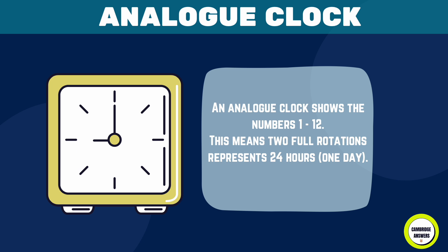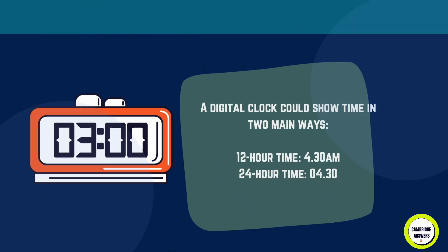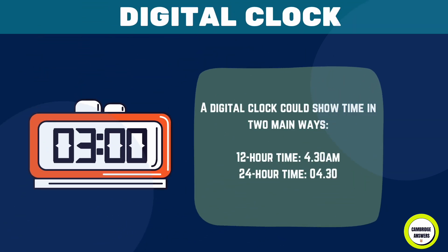A digital clock can show time in two main ways: 12-hour time, such as 4:30 a.m., or 24-hour time, such as 4:30.